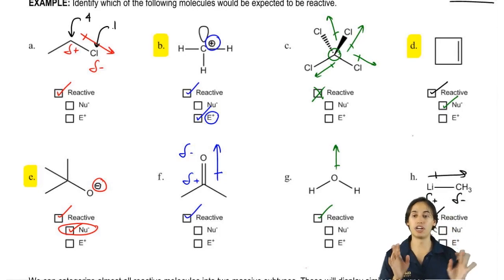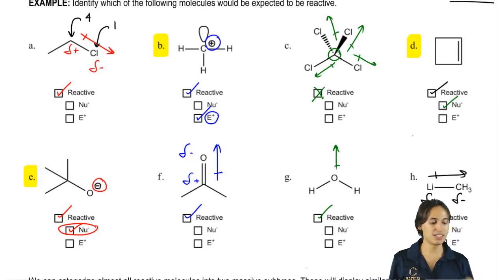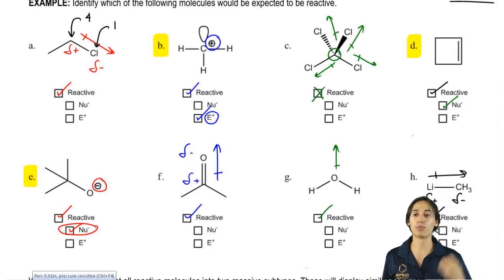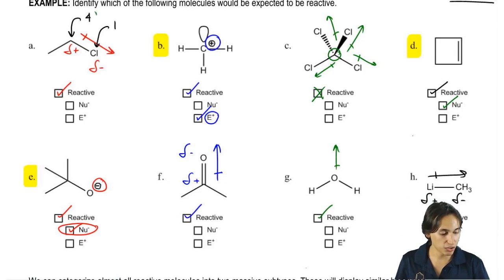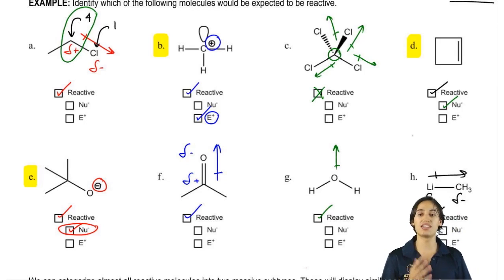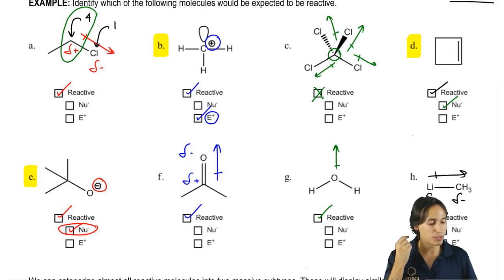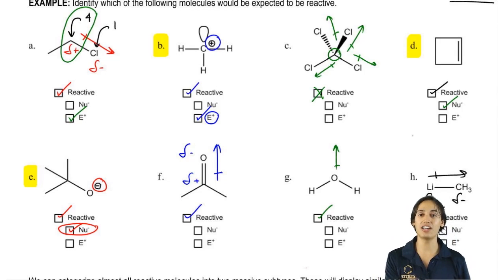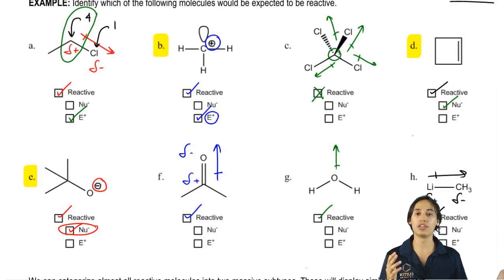Remember, according to bonding preferences — you're going to keep using bonding preferences all semester. So is this going to react more like a nucleophile or more like an electrophile? I look at the highest bonding preference and I look at that charge — that's the one I pay attention to. So the answer is that this is actually going to be a really good electrophile. Why? Because the atom that has the highest bonding preference is the one that is positively charged.